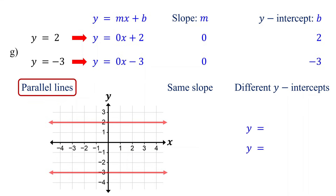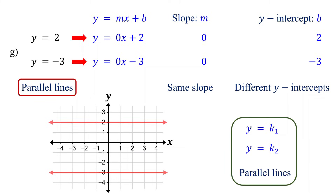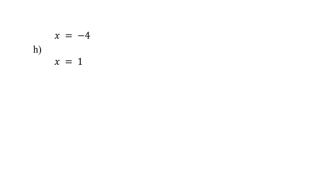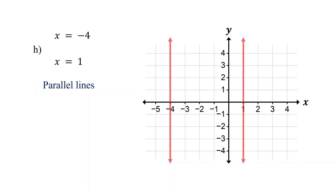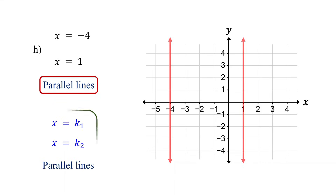In general, if the two equations are in the form y equals a constant, they represent parallel lines. Now let's flip the scenario. What if there's no y-term in the equations? Since there is no y, these equations cannot be written in slope-intercept form. But remember, when x equals a constant, it represents a vertical line. So x equals negative 4 is a vertical line crossing the x-axis at negative 4, and x equals 1 is a vertical line crossing the x-axis at 1. They are parallel lines. In general, if the two equations are in the form x equals a constant, they represent parallel lines.